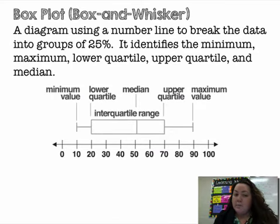A box plot or a box and whisker plot is a diagram using a number line to break the data into groups of 25%. It identifies the minimum, the maximum, the lower quartile, the upper quartile, and the median.